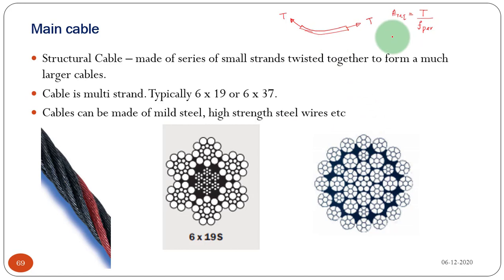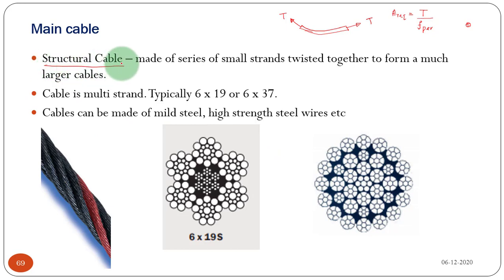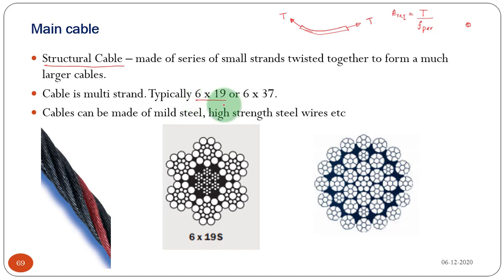That is why you cannot simply provide a wire. The cable is not just a wire — it is made in a different way. You should call it a structural cable, meaning it is made of a series of small strands twisted together to form a much larger cable. It is a multi-strand cable. Typically a cable is designated as 6×19 or 6×37.